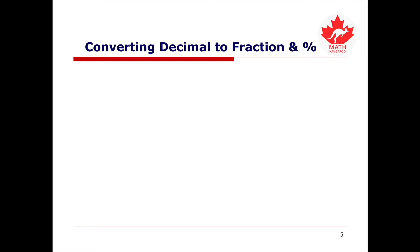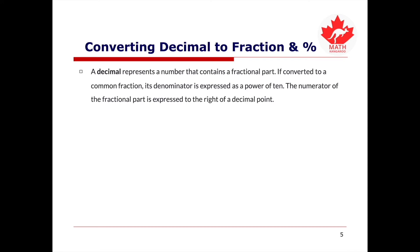The next thing we're going to take a look at is how do we convert decimal to fraction and percent. A decimal represents a number that contains a fractional part. If converted to a common fraction, its denominator is expressed as a power of 10. The numerator of the fractional part is expressed to the right of a decimal point. Here are two examples, and we notice that the common fraction form can often be reduced or simplified. The first example is we want to convert 0.45 into a fraction. Step 1, we want to convert the denominator into a power of 10, and we get 45 over 100, and that's equal to 9 over 20 by simplification.